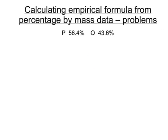Sometimes, instead of individual masses, we're given percentages by mass, but don't let this phase you, because you've just got to imagine you've got 100 grams. Now, if I had 100 grams of this substance, then for phosphorus, I would have, of that, 56.4 grams, and for oxygen, I'd have 43.6 grams. And from now on, I just use exactly the same method.